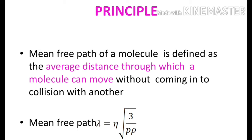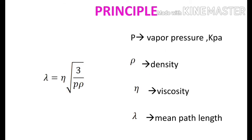Here you can see a formula to determine the mean free path. Lambda is the symbol used to represent mean free path. Lambda equals eta root of 3 divided by P rho. Here, P stands for vapour pressure, rho stands for density, eta stands for viscosity, and lambda represents mean free path. This equation is used to determine the mean free path.